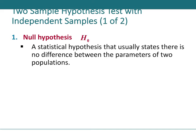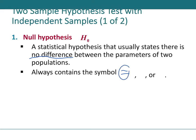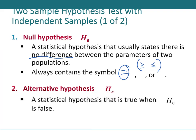H₀ usually states no difference (equals zero). Occasionally a handicap value is used, but not in this course. Always use the equals sign in H₀; this avoids errors. If you use ≤ or ≥ in H₀, that opens the door to mistakes, so just use equals and put all emphasis on H_A.